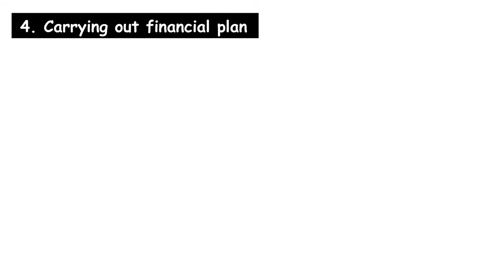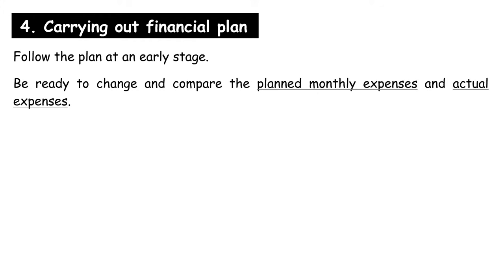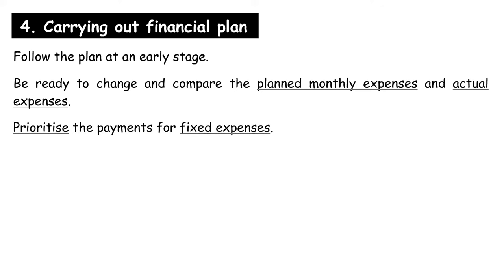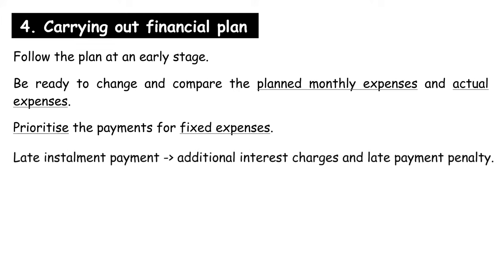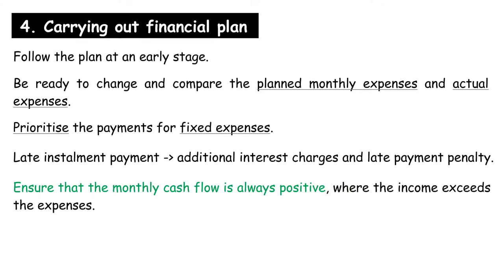Carrying out a financial plan: Follow the plan at an early stage and be ready to change. Compare the planned monthly expenses and actual expenses to identify any wastage and reduce actual expenses. Prioritize payments for fixed expenses such as housing loan installments, credit card payments, and car installments, as late installment payments will lead to additional interest charges and late payment penalties. Ensure that the monthly cash flow is always positive, where income exceeds expenses.